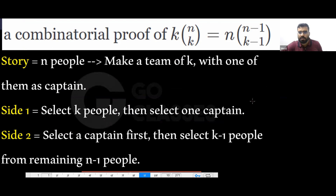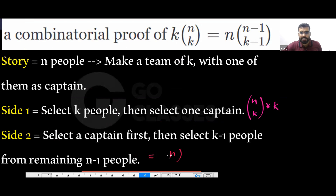So: select K people from N, then make one of them president. That equals: directly select a president first, then from the remaining people select K minus one people.